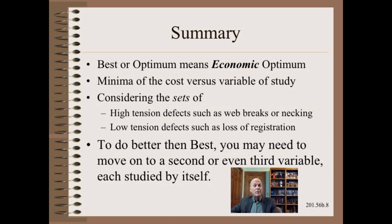In summary, optimum in business can only mean economic optimum. It is the minima of the cost versus variable of study. While this analysis may seem demanding in practice, it need not be so. There are many simple ways to know when your variables are not optimized. However, even if you don't choose either explicit or implicit analysis, you can learn much from the concepts taught here and detailed in my web class and other writings. You now know what optimal means, and you now know that optimizing a single setting while showing improvement does not necessarily mean life will be great — you may need to move other variables to satisfy the boss or the customer.